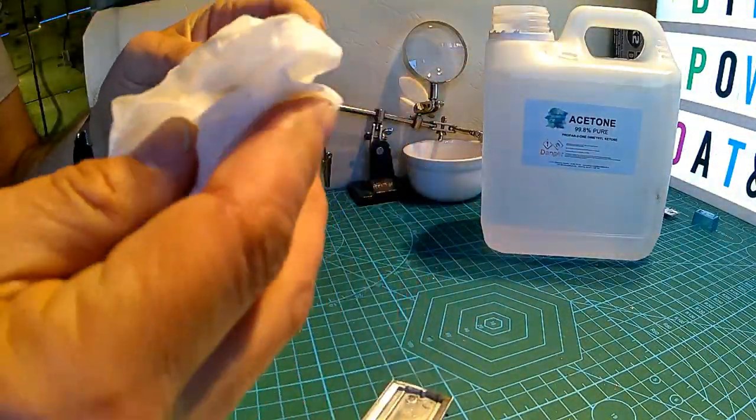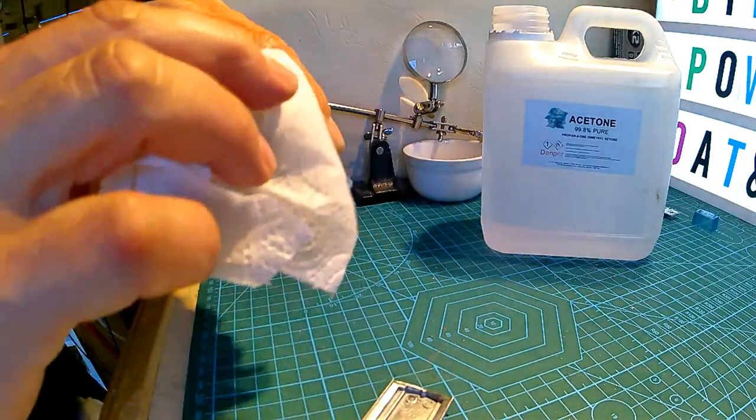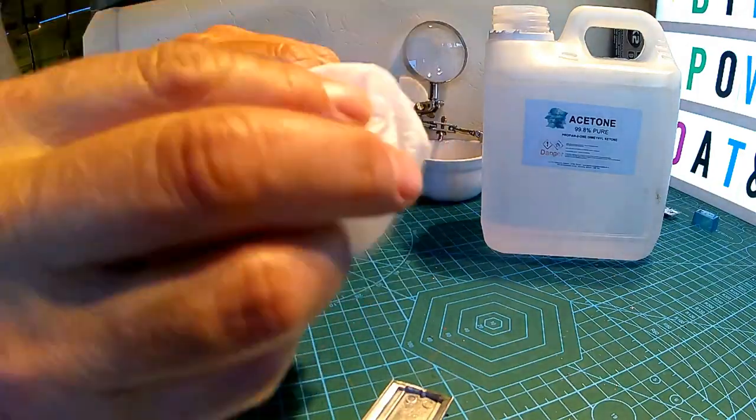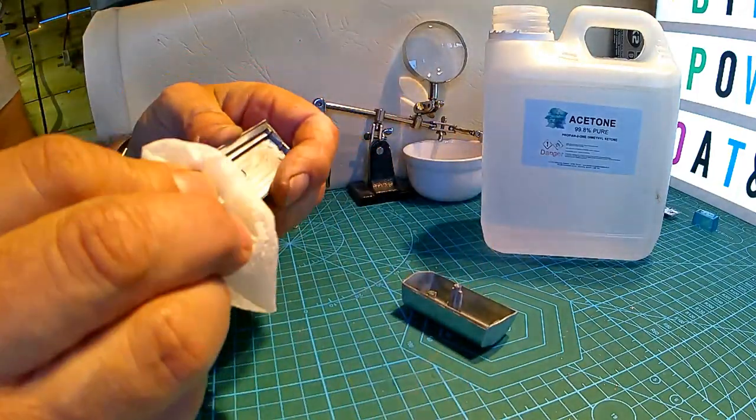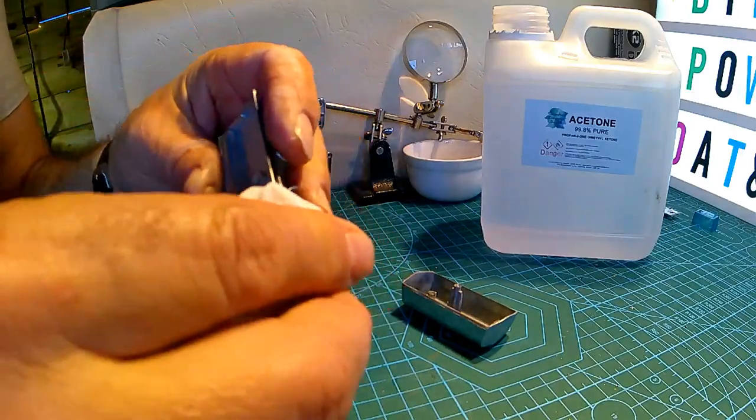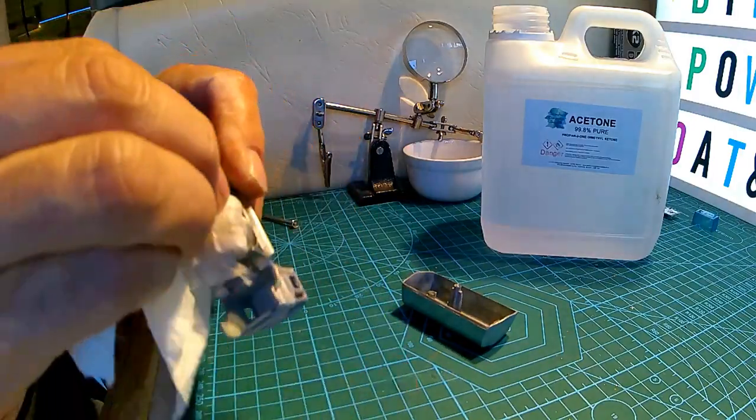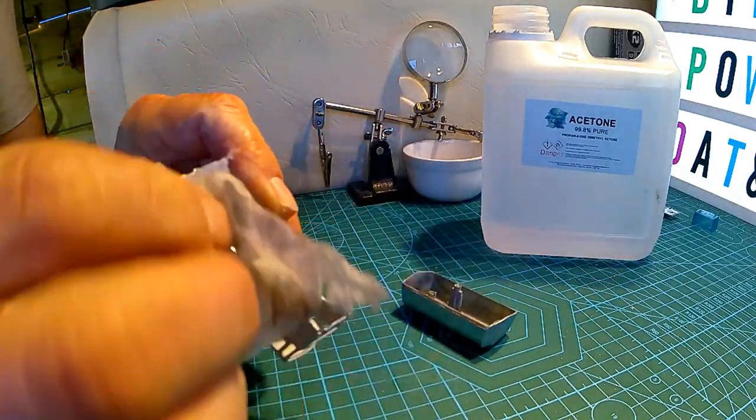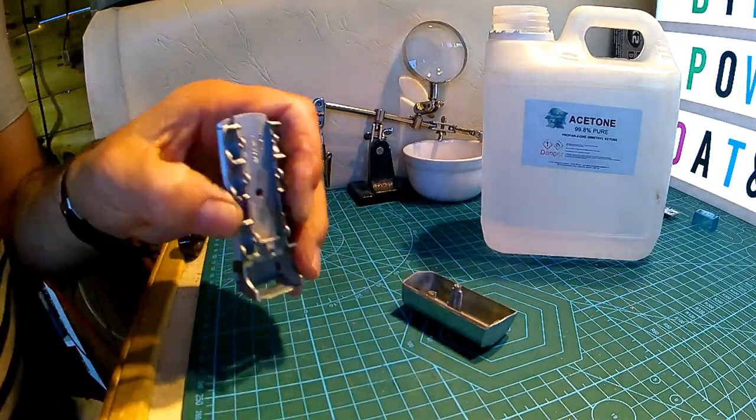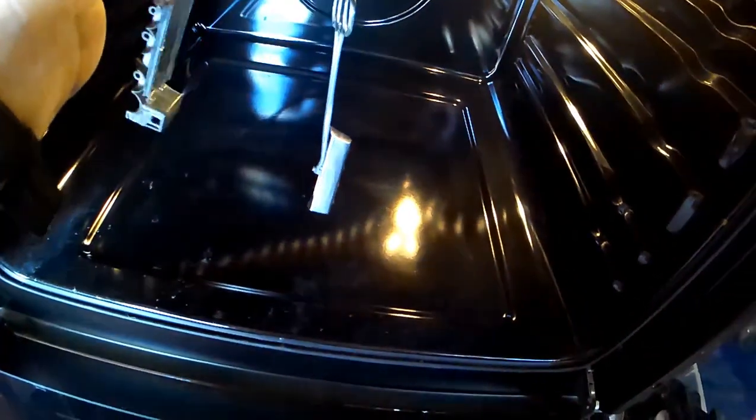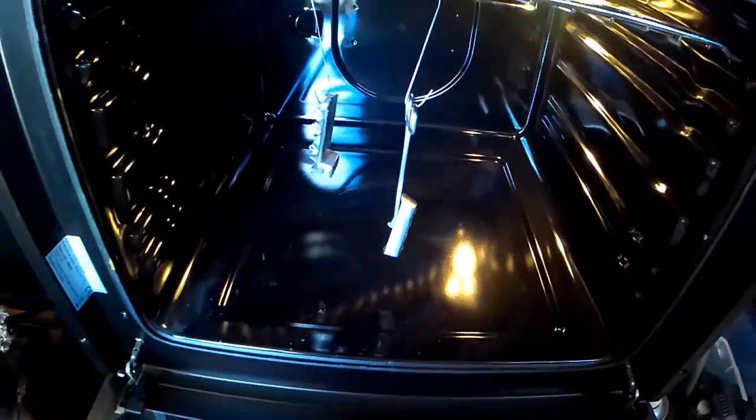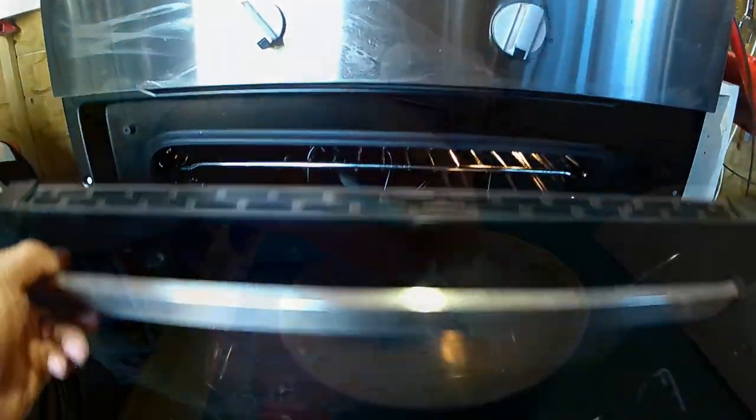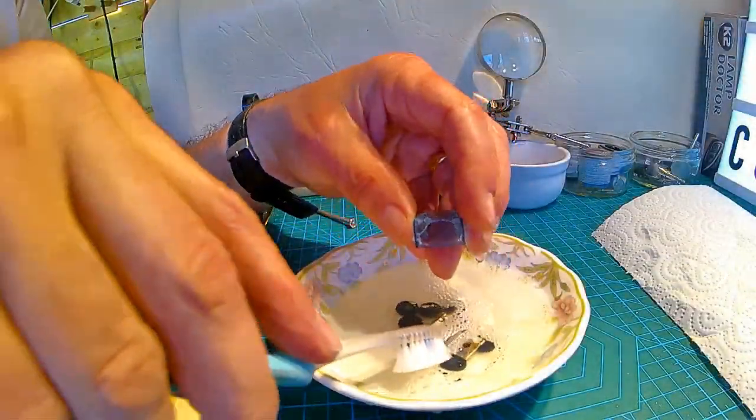And then the usual rub down with acetone, and then into the oven for about 10 minutes at 180 degrees, just to burn out the impurities in the metalwork.